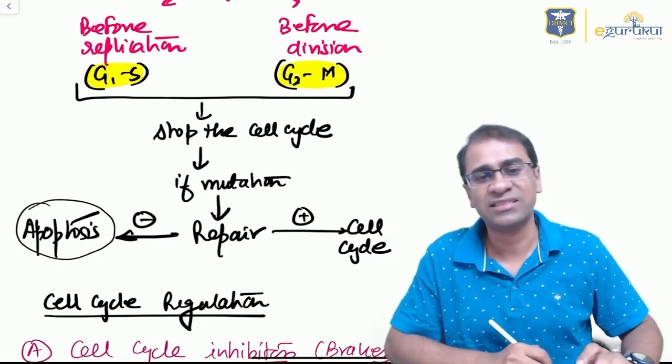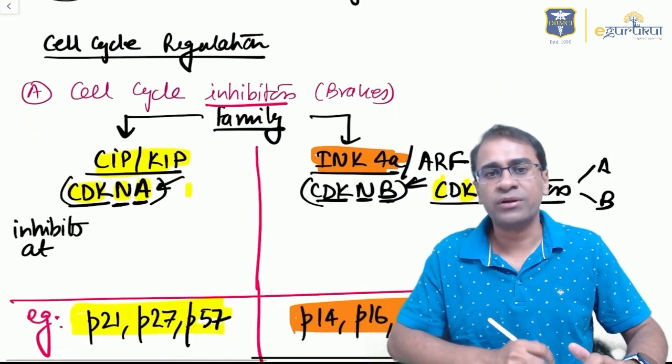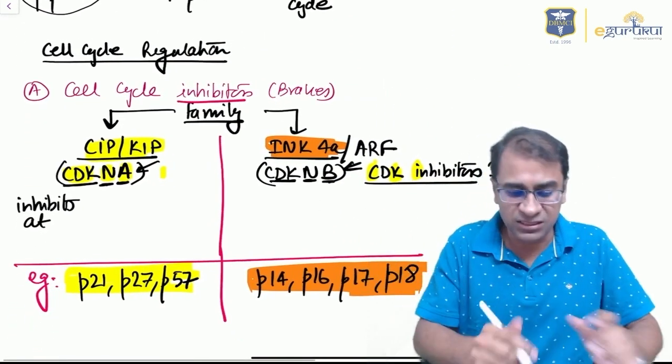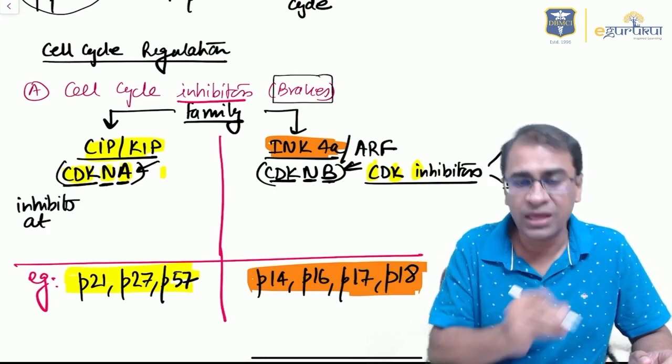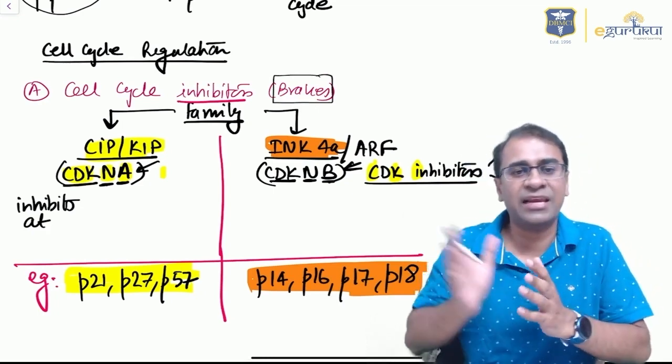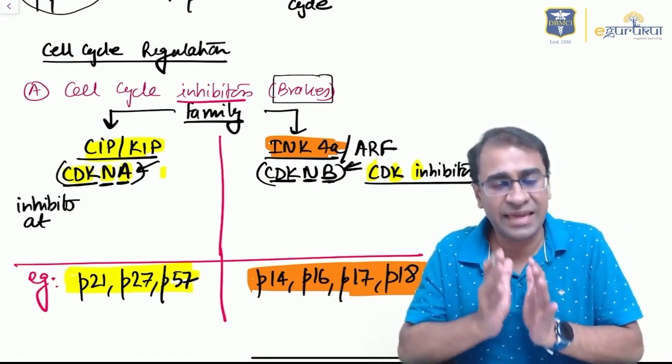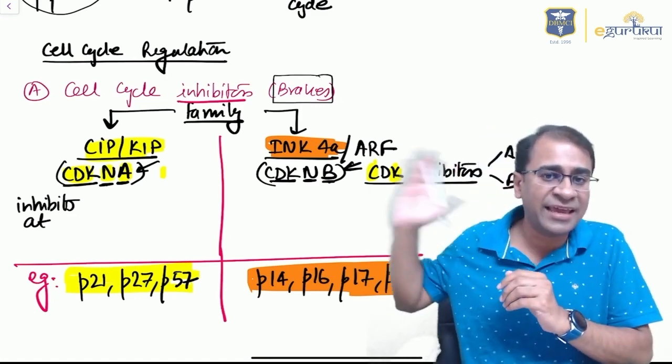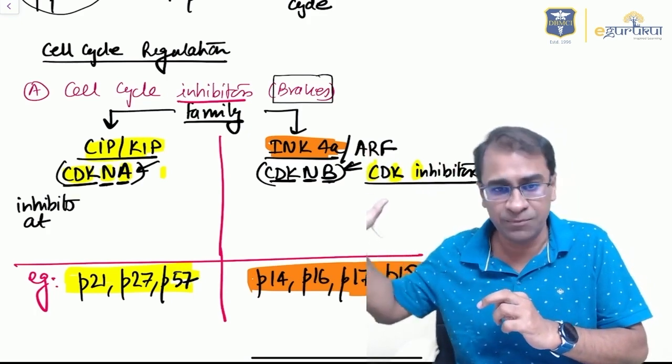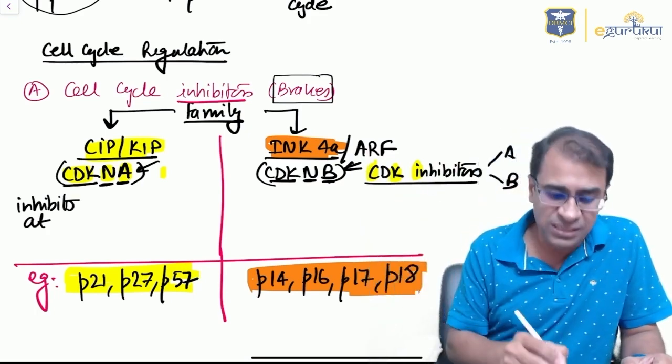Cell cycle inhibitors, also called brakepoints of a cell: the families are CIP, KIP, and INK4. The CIP/KIP family is also called CDKN2A, while INK4 is called CDKN2D. The inhibition of CIP/KIP is at G1-S and G2-M, whereas INK4 is at G1-S only.